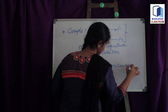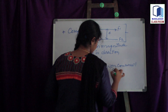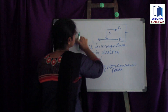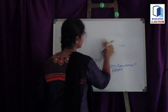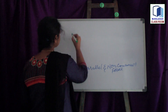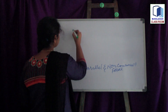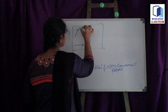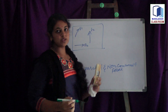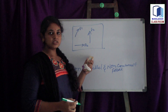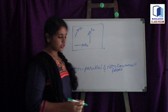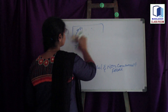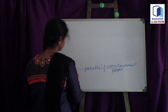Our fifth classification is non-parallel and non-concurrent forces. These forces are non-parallel, meaning they are not parallel to each other, and non-concurrent, meaning they do not meet at a single point. For example, consider a system where the forces are not parallel to each other and do not have a common intersection point — this system is known as non-parallel and non-concurrent forces.